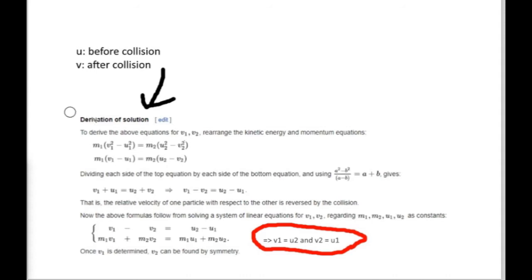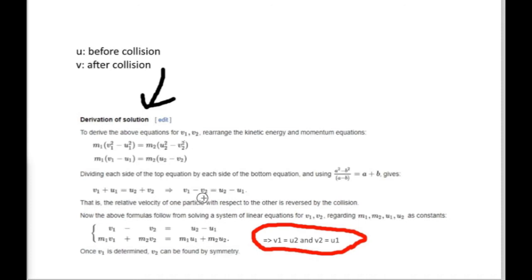This is a screenshot of the elastic collisions Wikipedia page. In this case, U means the velocity before the collision and V means the velocity after the collision. I have the two conservation laws here — one for kinetic energy and one for momentum — written in a way so I can divide the top parts by the bottom parts. Once I do that, the result I get will be V1 minus V2 equals U2 minus U1.